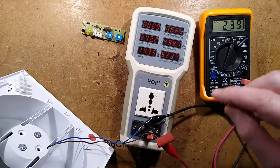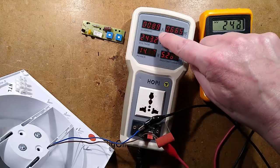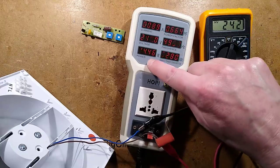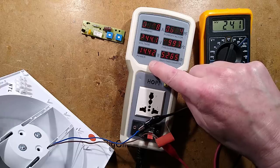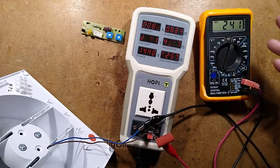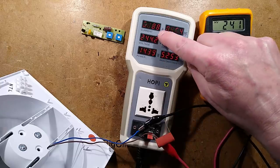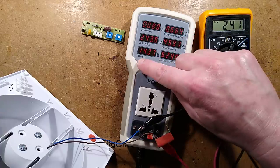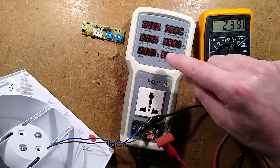It comes up to speed and settles down at 89 milliamps and 14.5 watts. It's showing mains voltage at 241 volts, so that's 88 milliamps, say 90 milliamps and 14.5 watts.